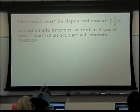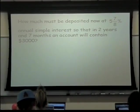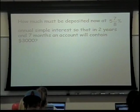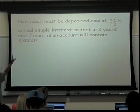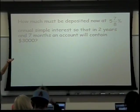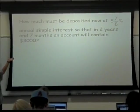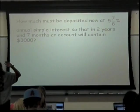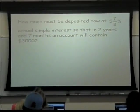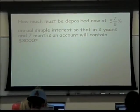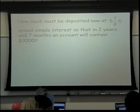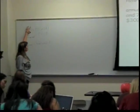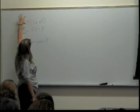How much must be deposited at 5 and 7/8 percent annual simple interest so that in two years and seven months, an account will contain $3,000? It's a future value type of question, but do I know how much money I'm putting in now? No. Do I know how much I'm going to have in the future? Yes. So I can still use my future value formula, because I have the future value, the rate, and the time. I just need to find the present value.